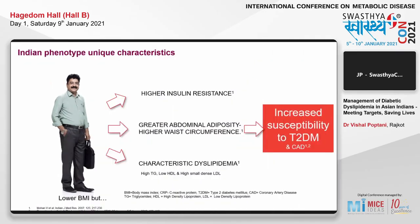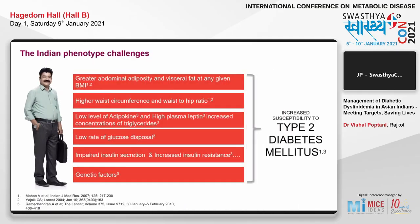The Indian phenotype has unique characteristics: higher insulin resistance, greater abdominal adiposity leading to higher waist circumference — a typical characteristic of Diabetic Dyslipidemia where you have high triglycerides, low HDL, and high small dense LDL. These factors substantially contribute to type 2 diabetes mellitus and consequently coronary artery diseases. Additional Indian phenotype challenges include greater abdominal visceral fat at any given BMI, higher waist-to-hip ratio, low adipokines, high plasma leptins, increased triglycerides, sedentary lifestyle, impaired insulin secretion, increased insulin resistance, and genetic factors.